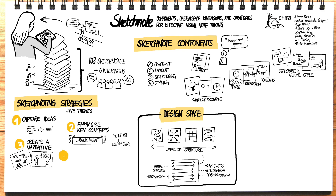Fourth, sketchnoters develop different techniques to refine the aesthetics of their sketches, often conveying a unique visual identity making their style recognizable and memorable. This is often expressed through the visual cohesion and composition of sketchnotes, giving them a unique visual identity.